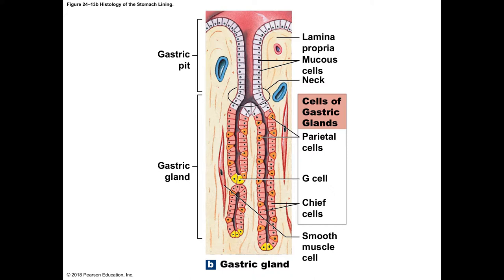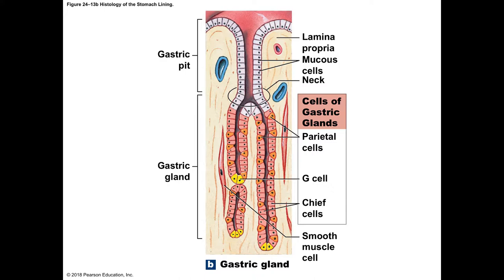We need intrinsic factor from the stomach. The secretions from HCl and pepsin break down proteins into an almost liquid substance. Now we no longer call it a bolus of food — we call it chyme (C-H-Y-M-E). The substance inside the stomach is now chyme, with a pH of about 1.5 to 2.0.